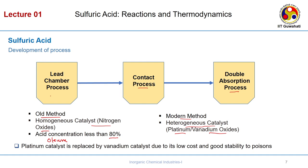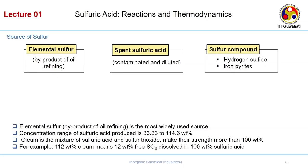The contact process is what most plants worldwide are using today. It uses sulfur from oil refineries. The sources of sulfur for the contact process are: by-products of oil refinery, spent sulfuric acid, hydrogen sulfide gas, and iron pyrite. Iron pyrite oxidation forms SO2 directly, but for the contact process we need elemental sulfur. The elemental sulfur comes from the by-products of oil refinery hydroprocessing reactions.